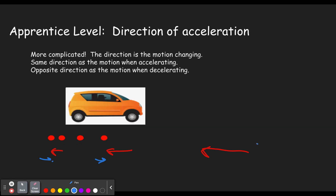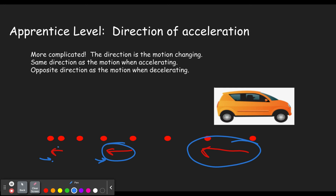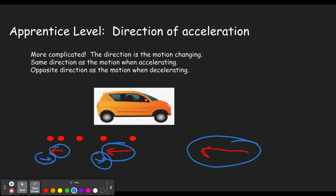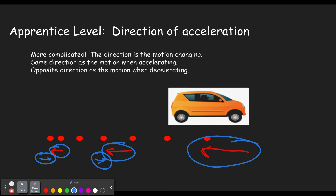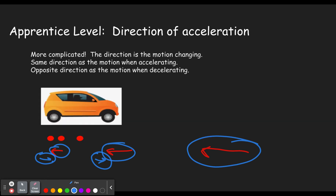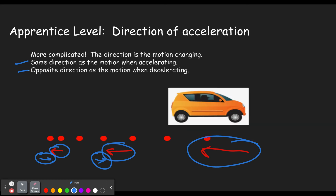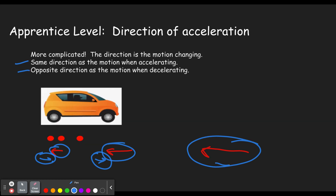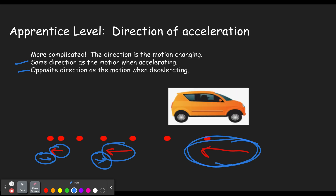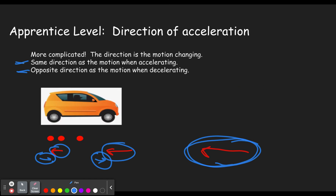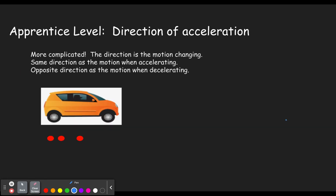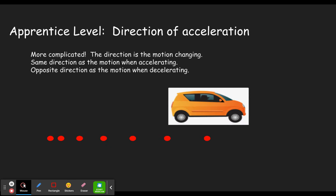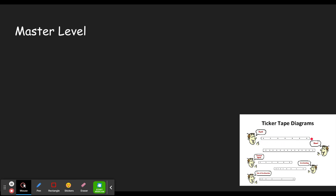So the direction of the velocity is to the left but the direction of the acceleration is to the right. That's pretty much what you have to do on the apprentice level — cars driving along either accelerating or decelerating, moving right or left. Finally, some cars just go at constant velocity. Cars at constant velocity leave an evenly spaced ticker tape. If it left something like this, that would be constant velocity moving right or moving left.